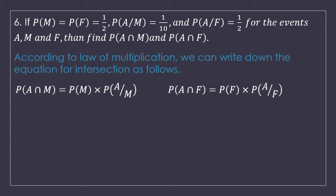P(M) multiplied by P(A given M) is 1 upon 2 multiplied by 1 upon 10 — just multiply them, we get 1 upon 20. Similarly, P(F) multiplied by P(A given F) is 1 upon 2 multiplied by 1 upon 2, giving us 1 upon 4. The answers are: A intersection M is 1 upon 20 and A intersection F is 1 upon 4.